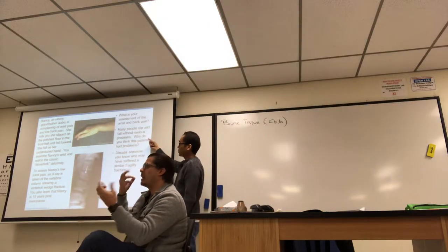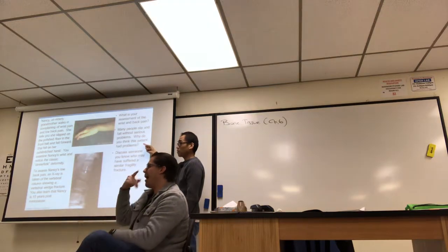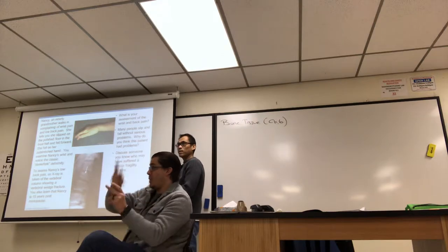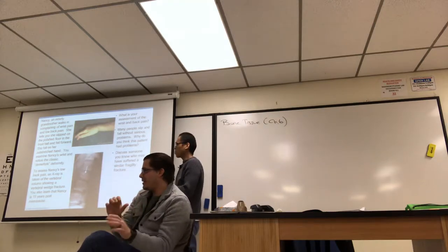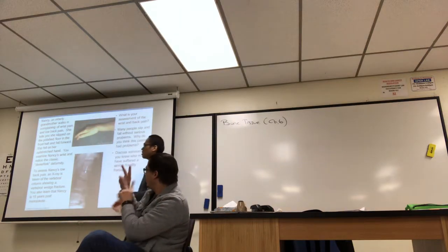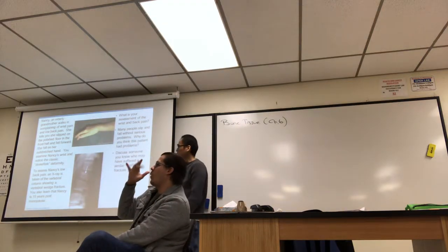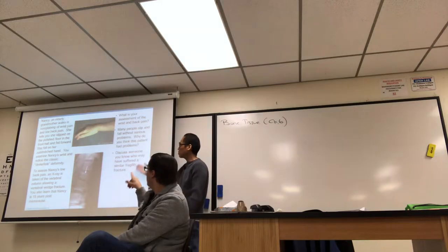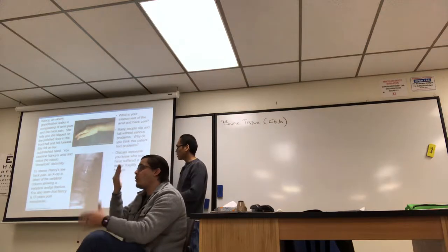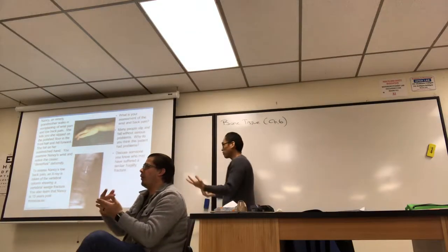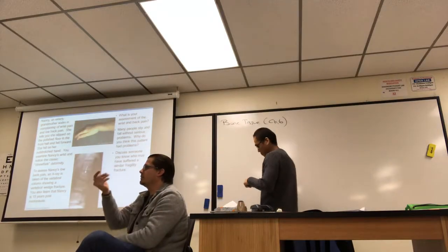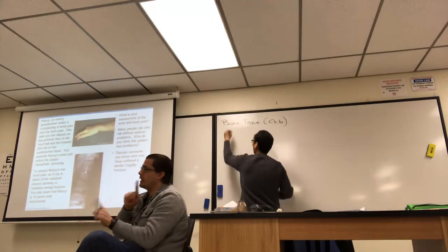Number two, people slip and fall without serious problems. Why do you think this patient had problems when they fell? Young person falls, they don't break anything. Old people fall, bones break. Why is that? Was there anything in the case that makes you think there might be something else we want to look at? Number three, talk to your neighbor. Discuss someone you know who may have suffered a similar fragility fracture. Maybe mom, dad, maybe grandma, grandpa. So take a few minutes and do that on your half sheet.